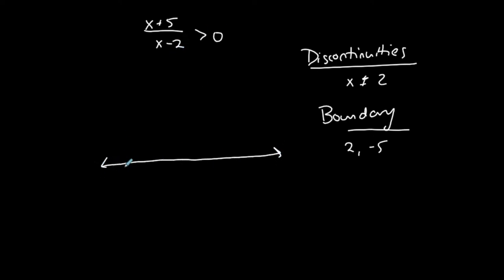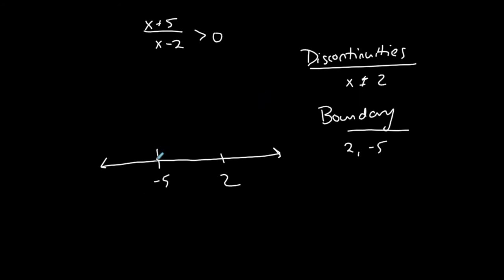Once you find your boundary values, put them on a number line from least to greatest, and do the same thing we did with polynomial inequalities. Now I want to determine whether to shade them in or keep an open circle. The discontinuity is always open because x can never be two — even if the inequality said greater than or equal to, two is never included because it makes the denominator zero.